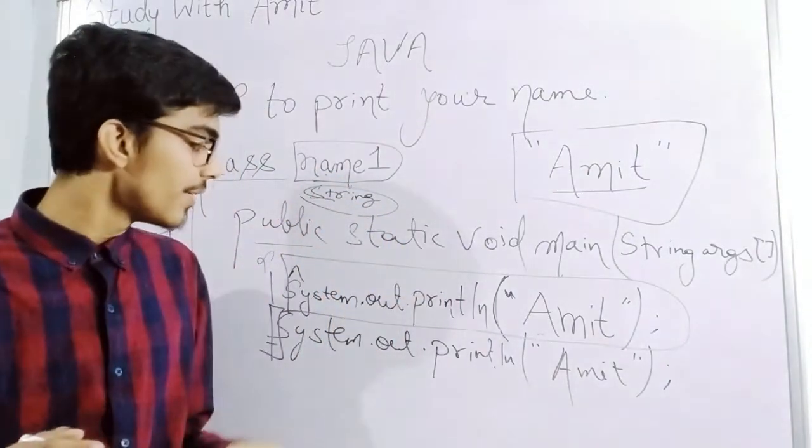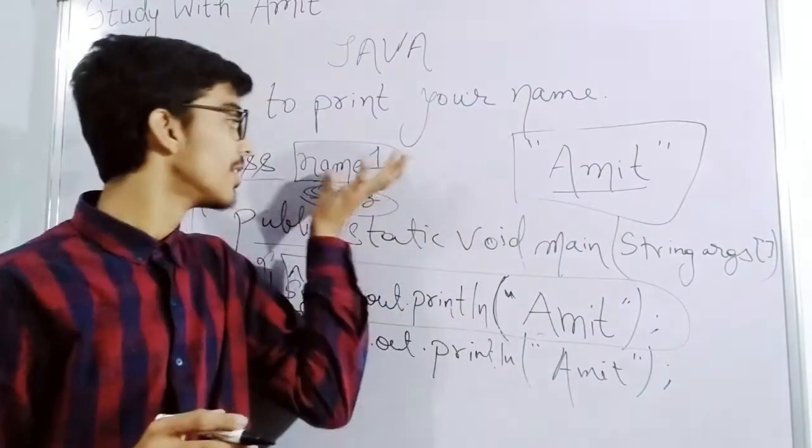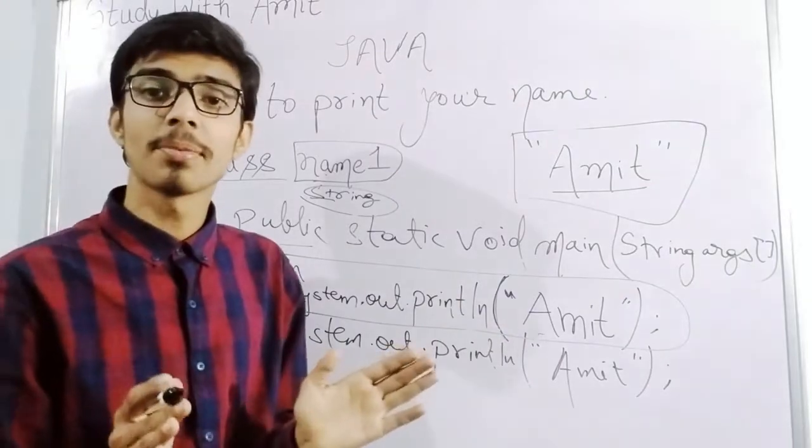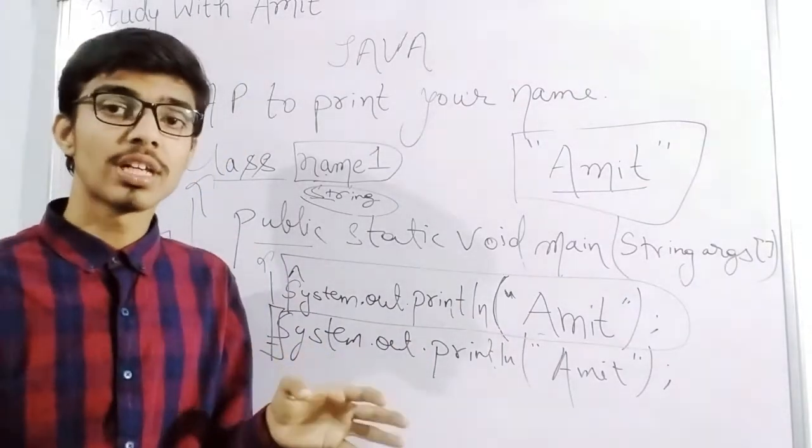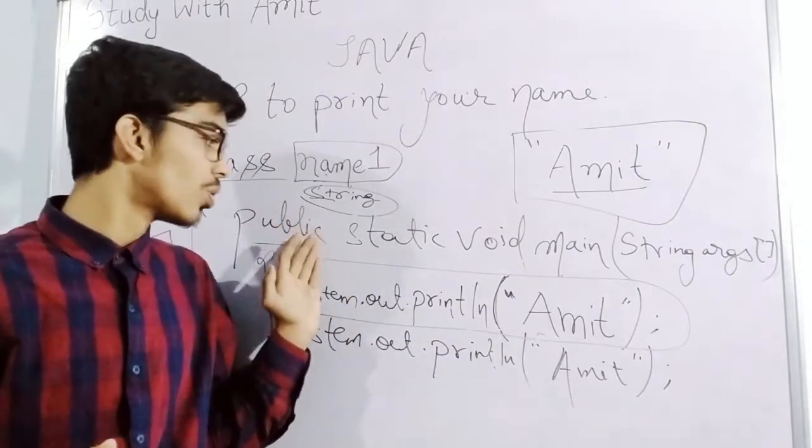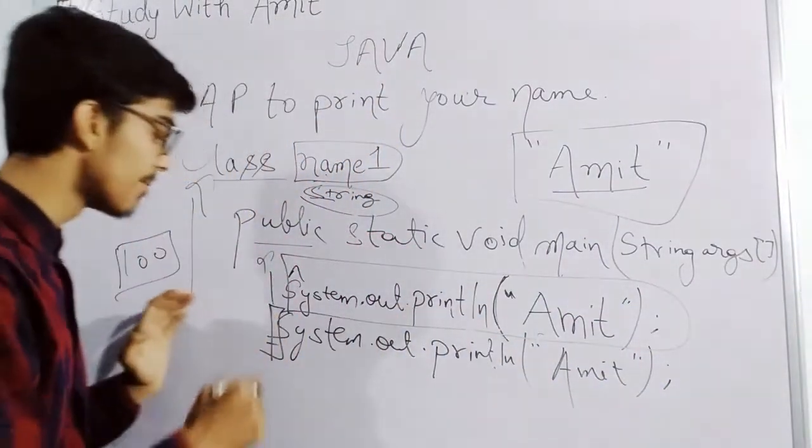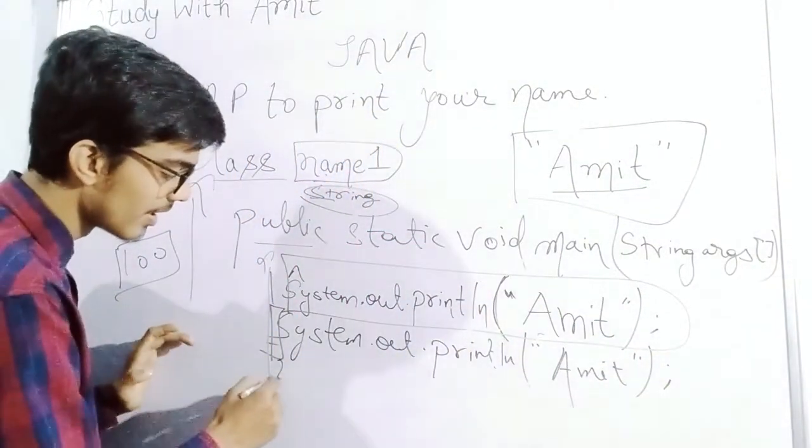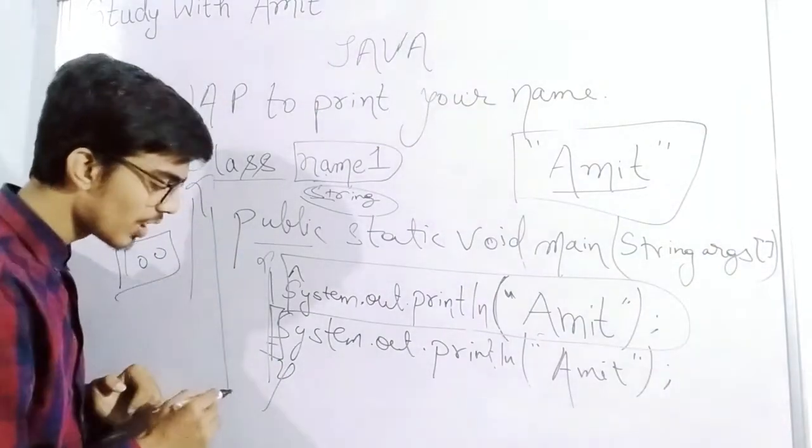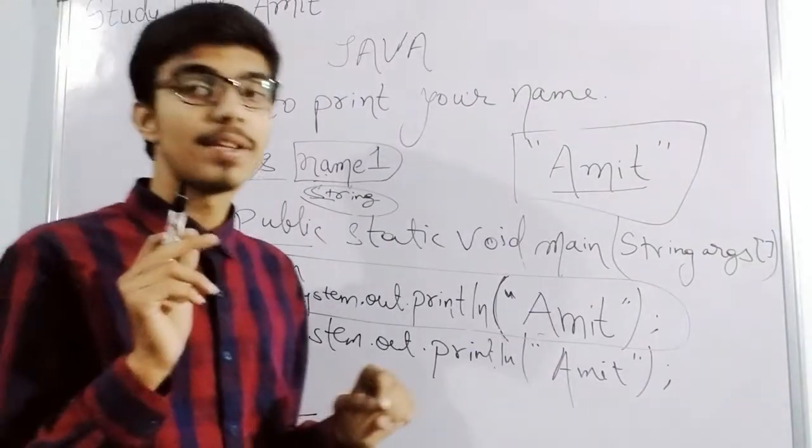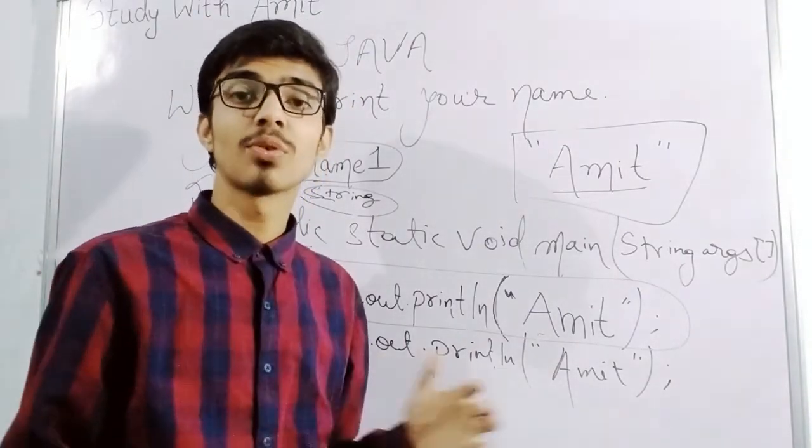If we write void here as the class name, it will not take any input. The program will not be executed, it will give an error. This we should learn. Number of brackets open is equal to the number of brackets closed. If you open two brackets, then we have to close another two.